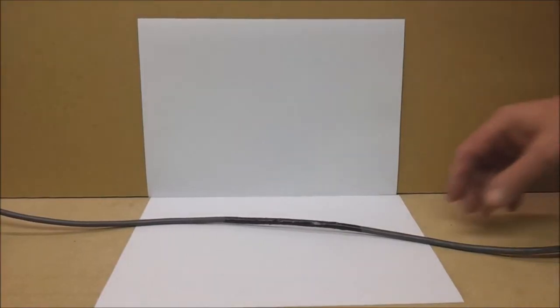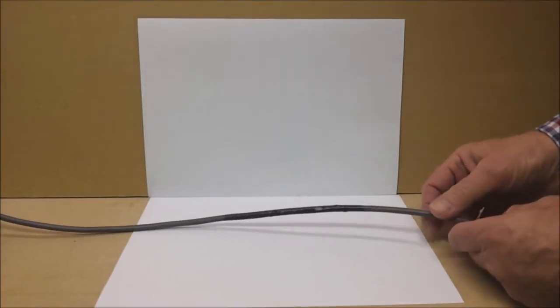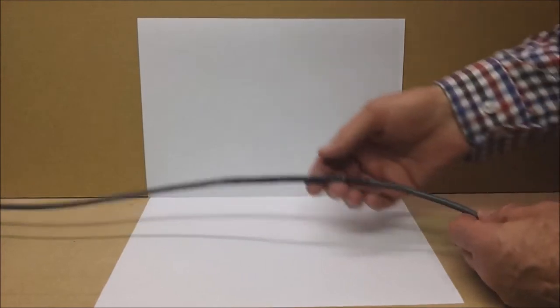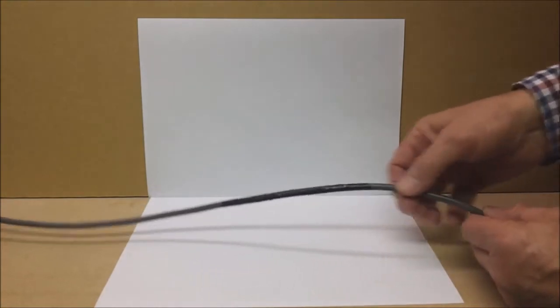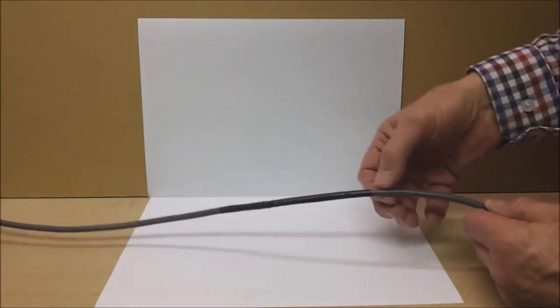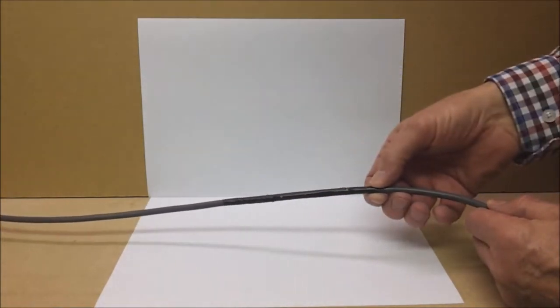In the house we have an upright vacuum cleaner with a front rotating brush which attacked this vacuum cleaner lead quite viciously and spoiled the insulation, so I've bound it with PVC tape.